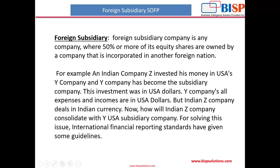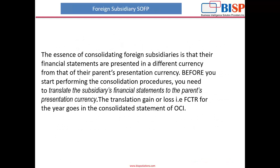For example, an Indian company Z invested its money in USA company Y, so Y has become the subsidiary company. There are two companies: Indian company Z and foreign subsidiary Y. This investment was done in US dollars. Y company's all expenses and incomes are in US dollars, but Indian company Z deals in Indian currency (INR). Now, how will Indian company Z consolidate with USA subsidiary company Y? Because both currencies are different, IFRS has given some guidelines to solve this issue.